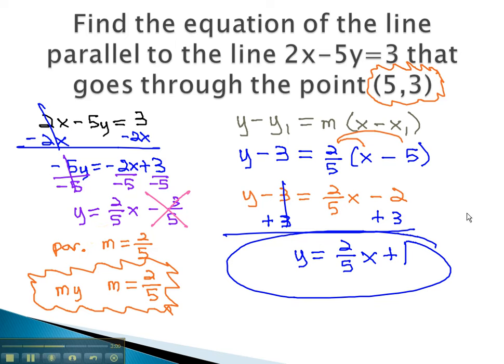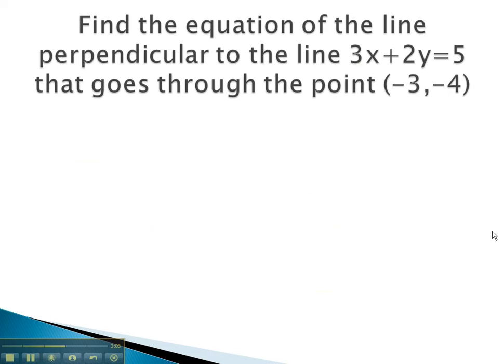Let's try another example, where we use the relationship of a perpendicular line. Here, we're given the equation 3x plus 2y equals 5. To be perpendicular, we need an opposite reciprocal slope.